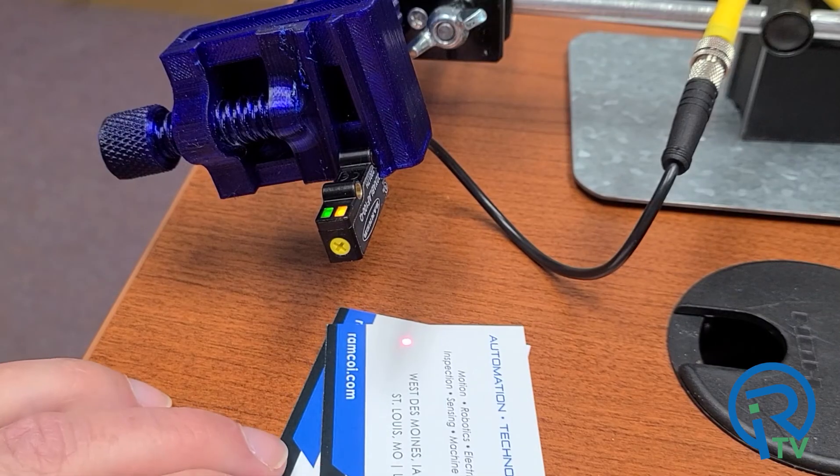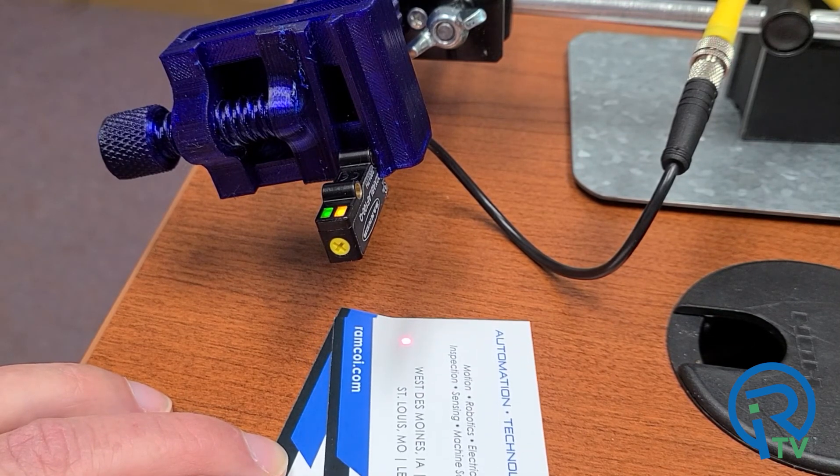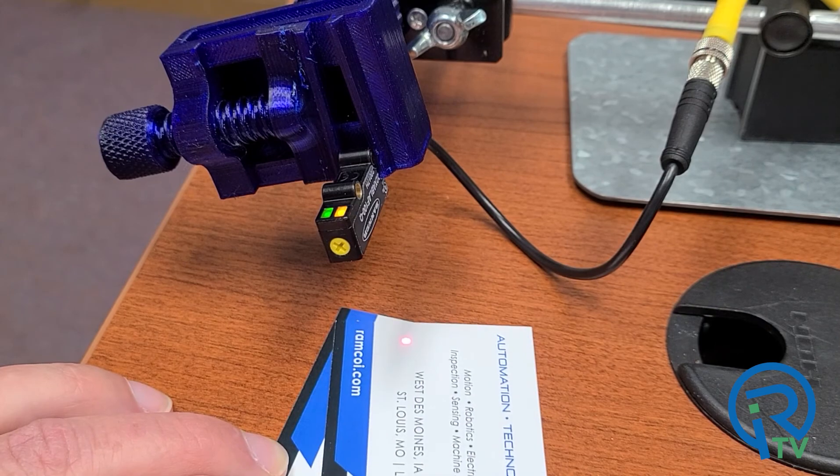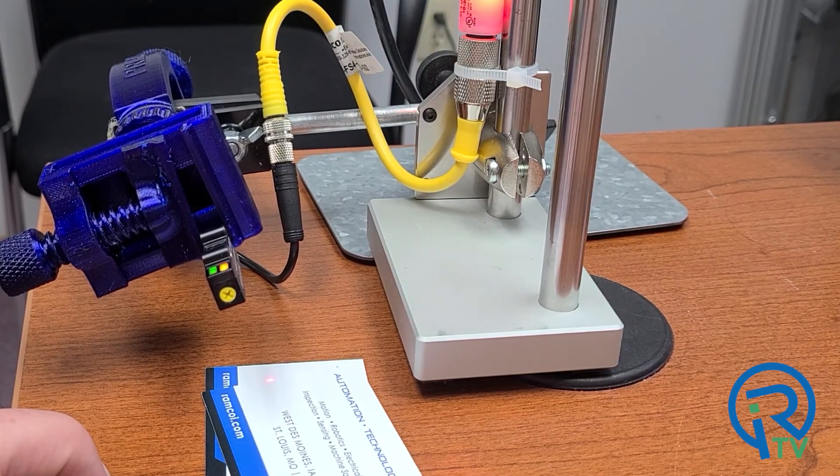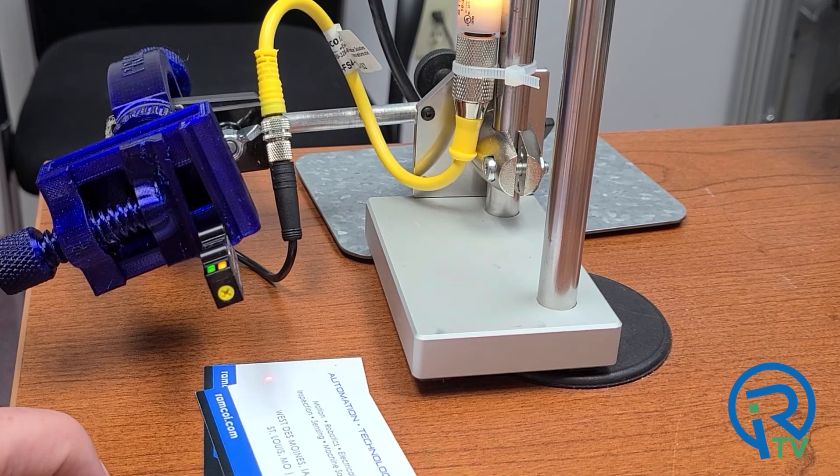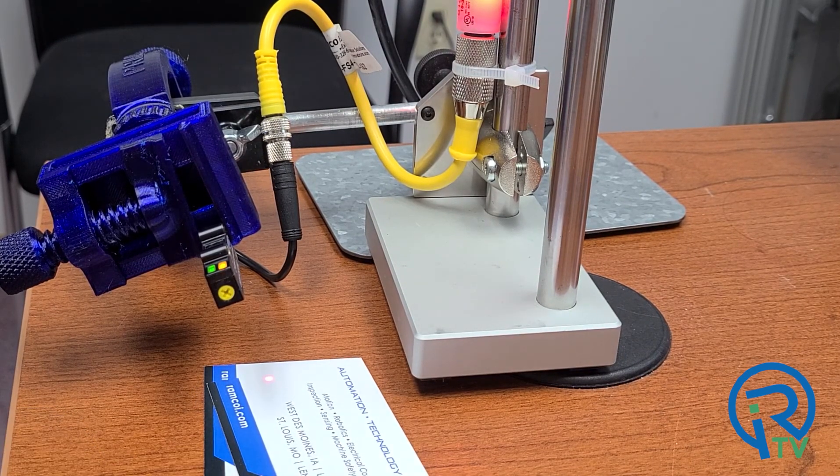These sensors are a really great choice in applications that require a very small footprint or where you need to detect different colored materials at a similar distance or ignore backgrounds. For more information on the adjustable field, opposed mode and retro versions, be sure to check out our website at ramkoi.com.